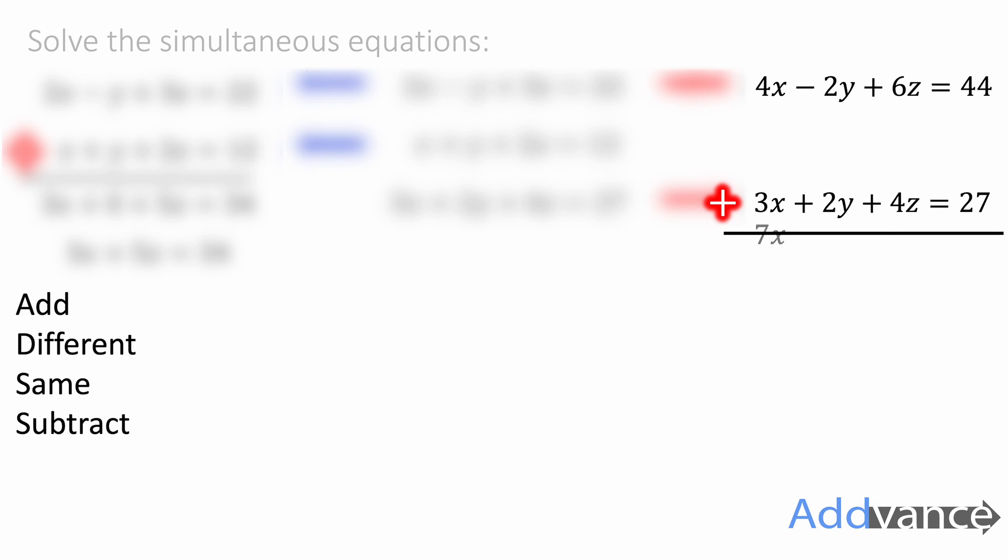4x plus 3x is 7x. Minus 2y plus 2y is 0. 6z plus 4z is 10z. 44 plus 27 is 71. And so we've got these two equations here.